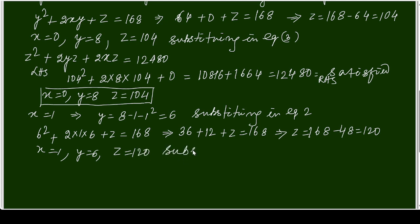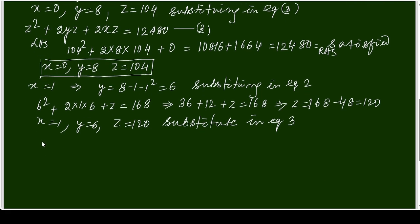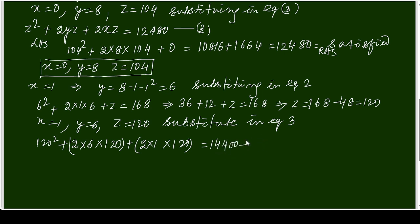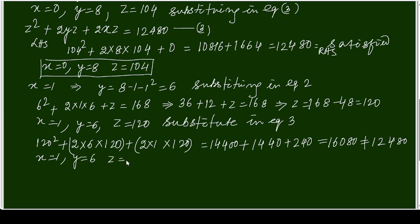Substituting x = 1, y = 6, z = 120 into equation 3: 120² + 2·6·120 + 2·1·120 = 14400 + 1440 + 240 = 16080. This is not equal to 12480, so x = 1, y = 6, z = 120 is not a solution.